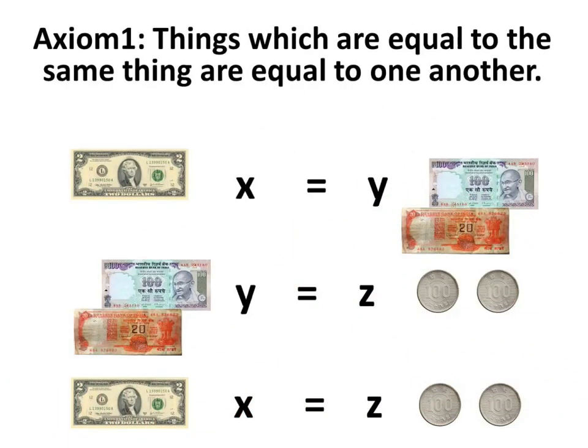Another example: say x dollars equal y rupees, and y rupees is equal to z yen. Then we can say x dollars are equal to z yen. That means if x is equal to y and y is equal to z, then x is equal to z. That is, things which are equal to the same thing are equal to one another — and this is what Axiom 1 says.